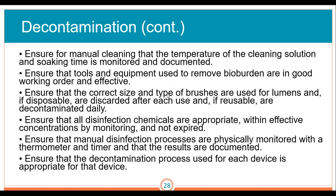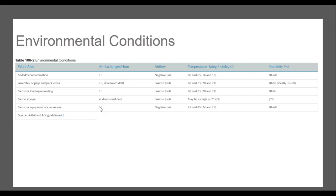We have about 15 minutes left, so let's get to some questions. These are our environmental conditions. Your soiled and decontamination area: 10 air exchanges per hour, negative pressure. I always remembered that decontamination is negative and has the lowest temperature: 60 to 65°F, and humidity 30 to 60%. When in doubt on humidity, go with 30 to 60.